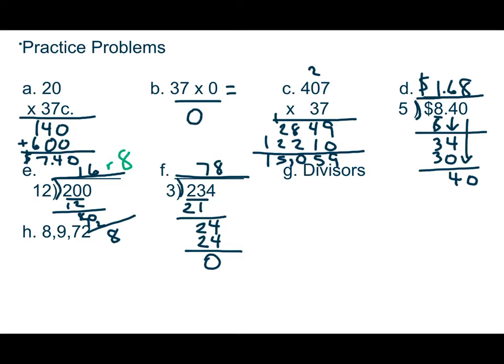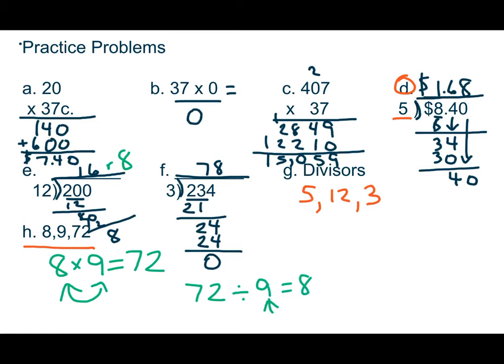And G says, which numbers are the divisors in problems D, E, and F? Well, the divisor in D. We look up here at D. The divisor is 5. That's the number that's going into. In E, the divisor is 12. And in F, the divisor is 3. And then H says, use the numbers 8, 9, and 72 to make two multiplication facts and two division facts. Again, fact family, fun, easy. You take the two smaller numbers. And they're going to be multiplied together to make the bigger number. You're going to write these out, of course. And then you have 72 divided by 9. It's going to equal 8. And then you can just swap those out. And that gives you four different problems.